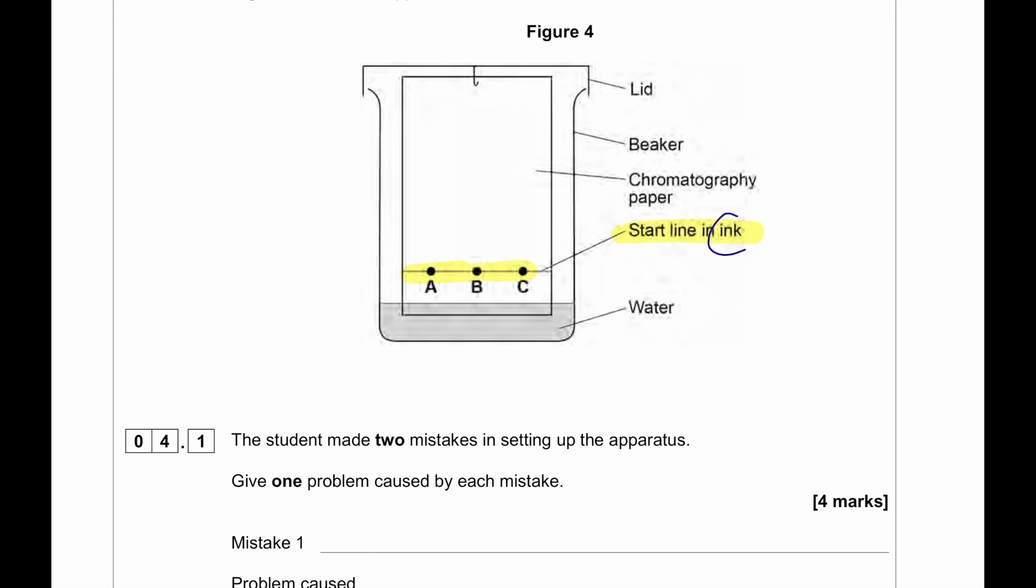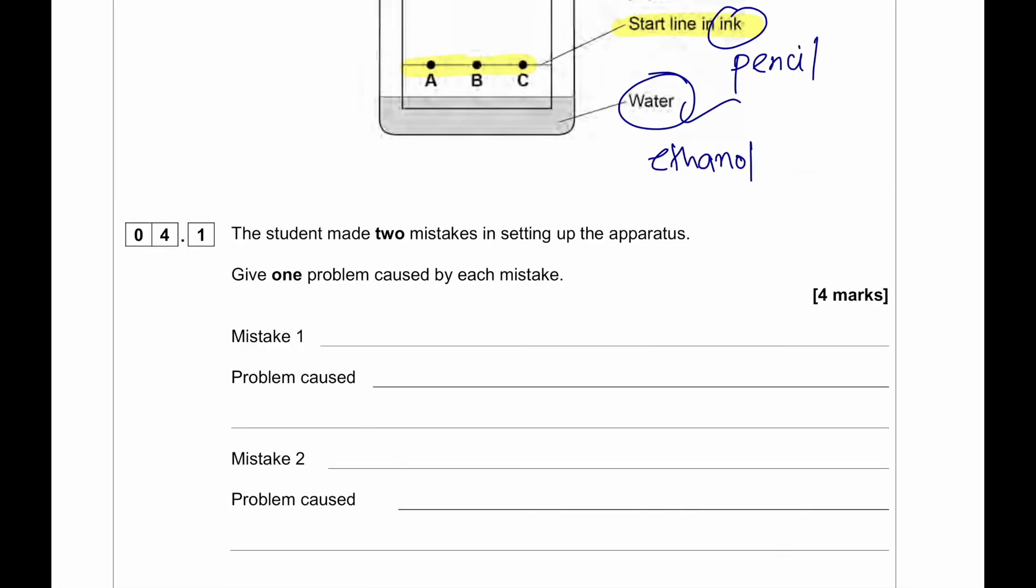The start line is drawn in ink. This is a mistake. It must be drawn in pencil. Chromatography paper, beaker, lid and water. Water should not be used. Instead, it should be ethanol because the colors are not soluble in water. It's already mentioned.